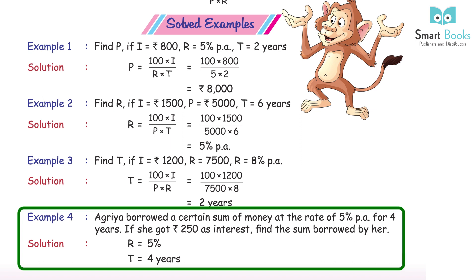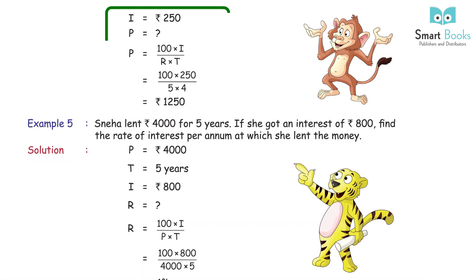Example 4: Agriya borrowed a certain sum at the rate of 5% PA for 4 years. If she got Rs 250 as interest, find the sum borrowed. Solution: R = 5%, T = 4 years, I = Rs 250. P = 100 × I ÷ (R × T) = 100 × 250 ÷ (5 × 4) = Rs 1,250.